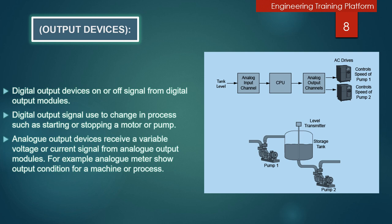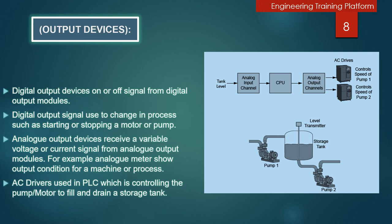Analog output devices receive a variable voltage or current signal from analog output modules. For example, analog meters show output condition for a machine or process. AC drives are used in PLCs for controlling pumps or motors to fill and drain a storage tank.